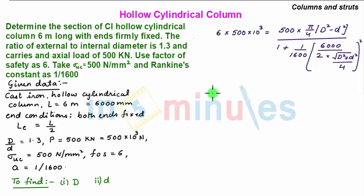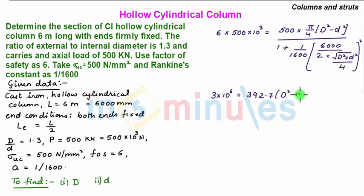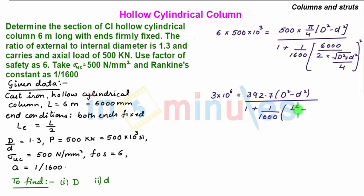The product of the two terms is 3 into 10 to the power 6, which is equal to the product of 500 into pi by 4, giving 392.7 into capital D square minus small d square, the whole upon 1 plus 1 by 1600 into 6000 divided by 2 multiplied by 4, the whole square — which gives capital D square plus small d square.